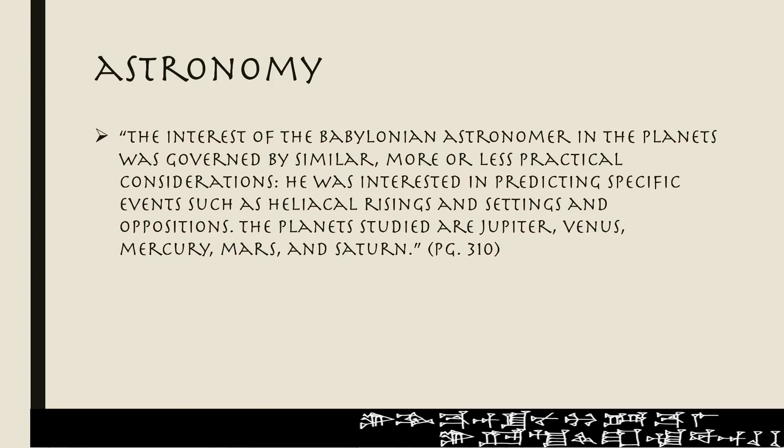Oppenheim says the interest of the Babylonian astronomer in the planets was governed by similar, more or less practical considerations. He was interested in predicting specific events such as heliacal risings and settings and oppositions. The planets studied are Jupiter, Venus, Mercury, Mars, and Saturn.